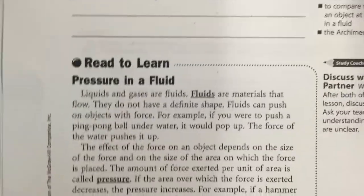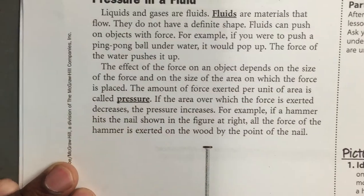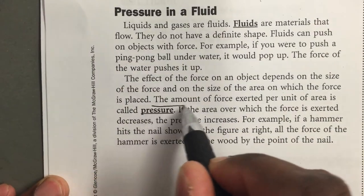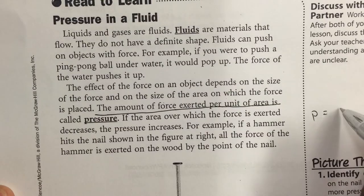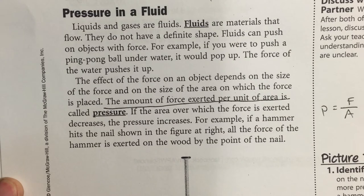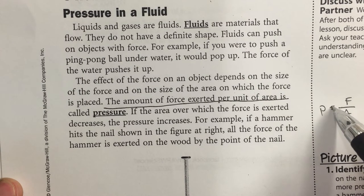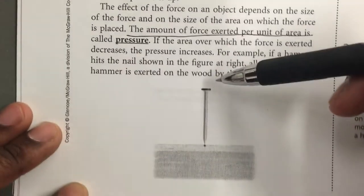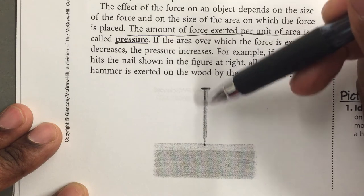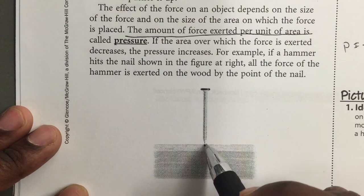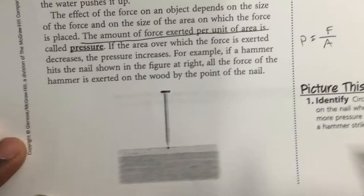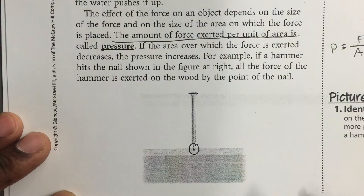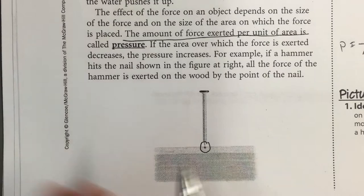Let's talk about pressure and the buoyant force. Pressure is the amount of force exerted per unit area — force divided by area. A good way to visualize this: if you have a nail and place it on a piece of wood, all the pressure is concentrated in a very small amount of space. The point of the nail is where there is the most pressure when a hammer strikes it, because all the force is in a very small area.